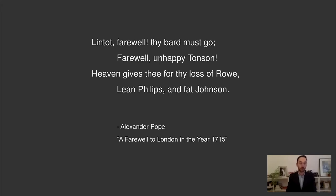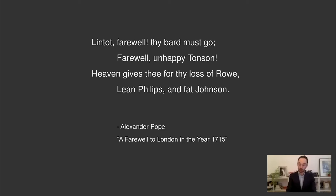In 1715, Alexander Pope — perhaps pleased with his own role in seducing Rowe away from Thompson and orchestrating the deal with Lintot — commemorated the event in his poem entitled A Farewell to London. In the fifth quatrain, Pope turned his attention to Rowe's shifting allegiances: 'Lintot, farewell, thy bard must go. Farewell, unhappy Thompson. Heaven gives thee, for thy loss of Rowe, lean Phillips and fat Johnson.' The bard in this quatrain is Pope himself, who, because he's fleeing London on account of recent anti-Catholic legislation, must bid farewell to his publisher Lintot. Thompson, meanwhile, must bid farewell to Rowe, and must make do instead with the poet Ambrose Phillips and the playwright Charles Johnson — poor substitutes, it would seem, for the marketability and prestige of a name like Nicholas Rowe's.